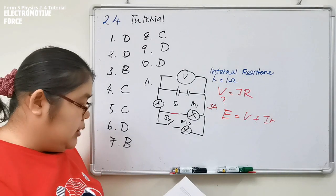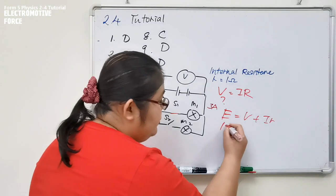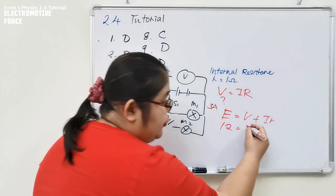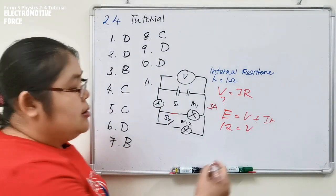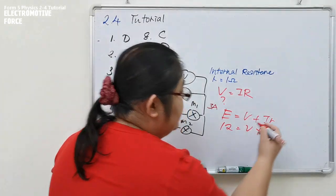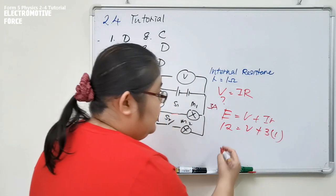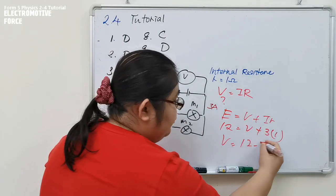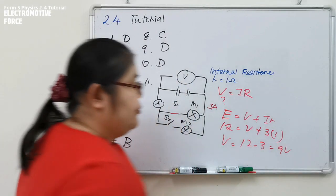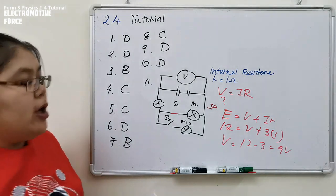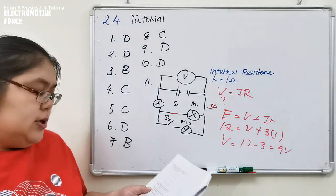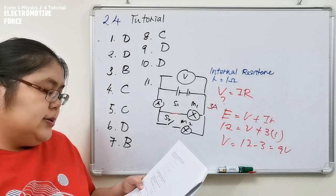Now E is 12, V we don't know, current becomes 3 ampere, internal resistance is 1. So I get V equals 12 minus 3, which becomes 9 volt. The first answer becomes 9 volt when I close the first switch.